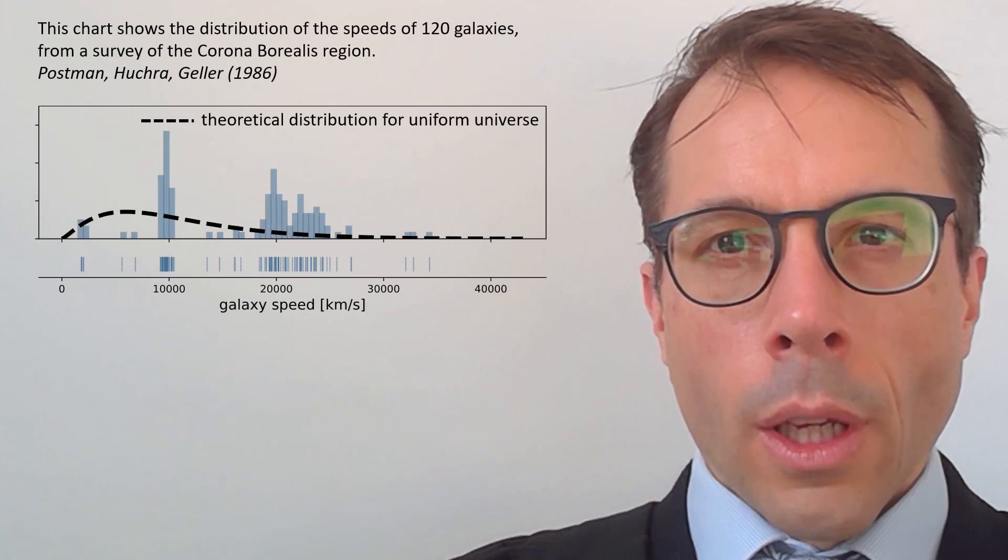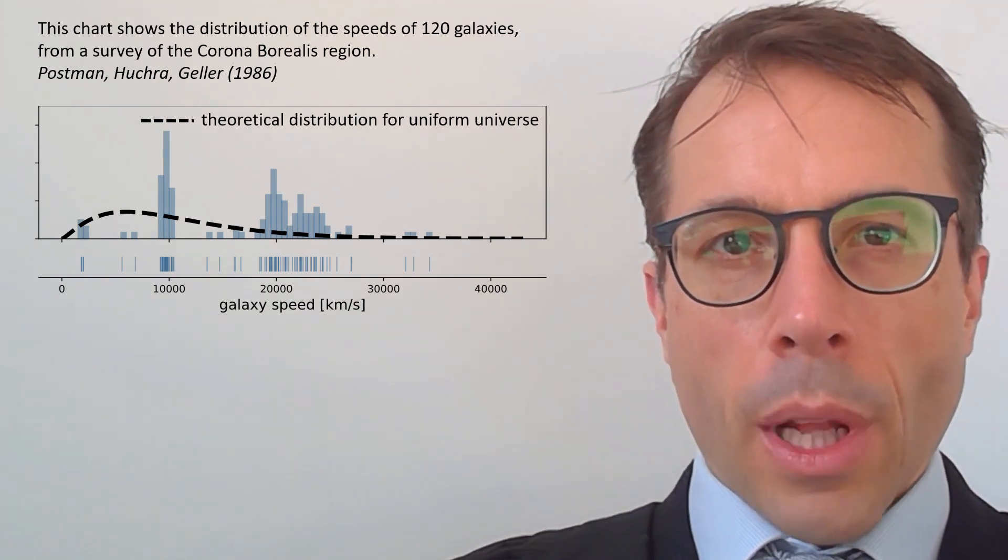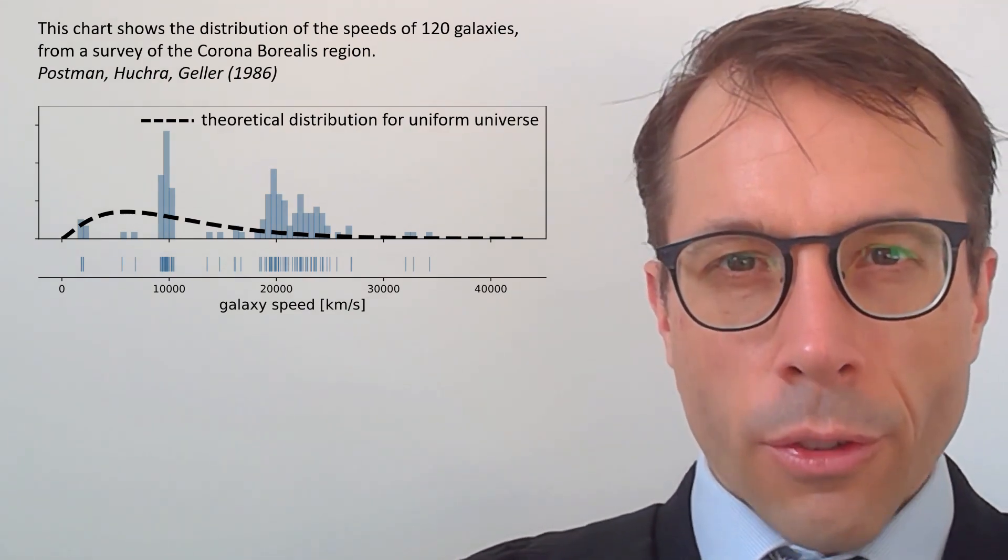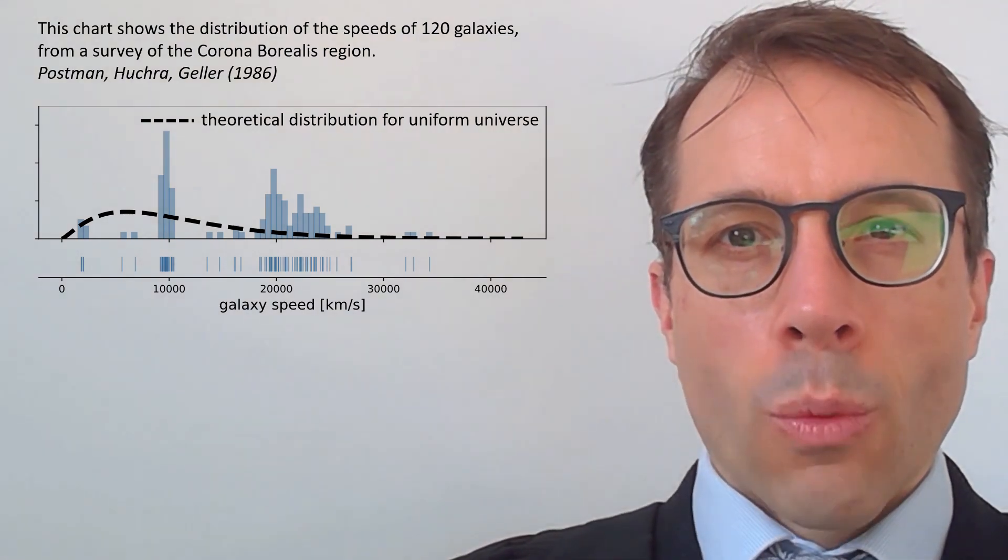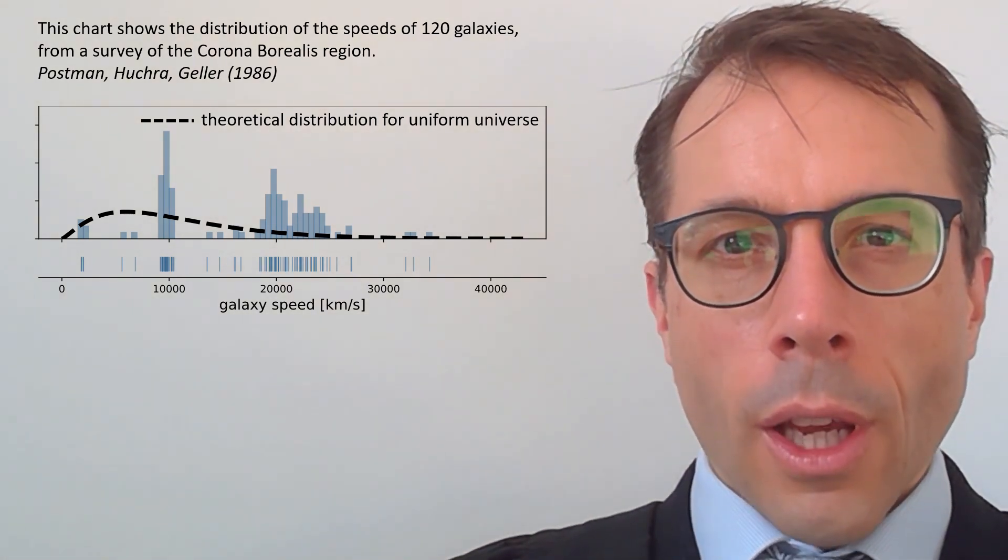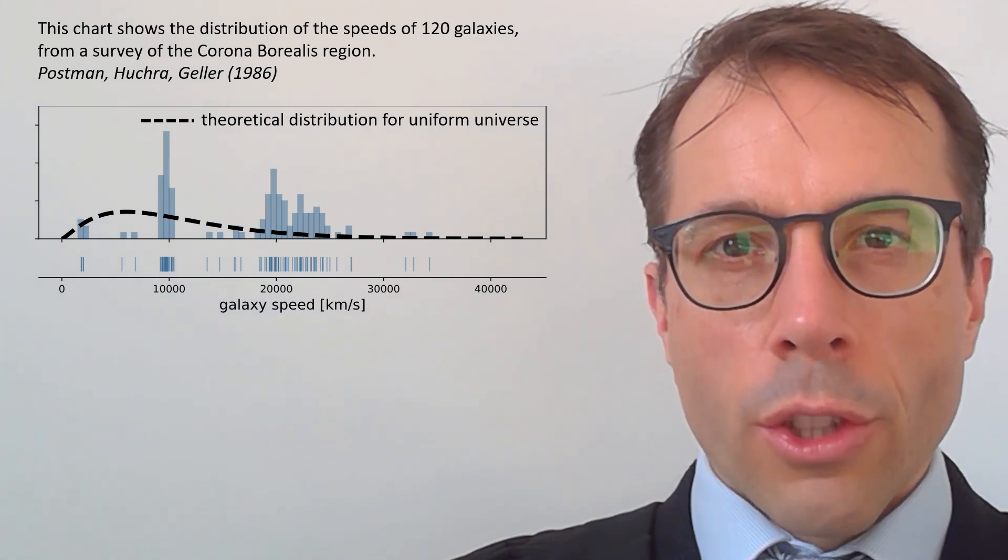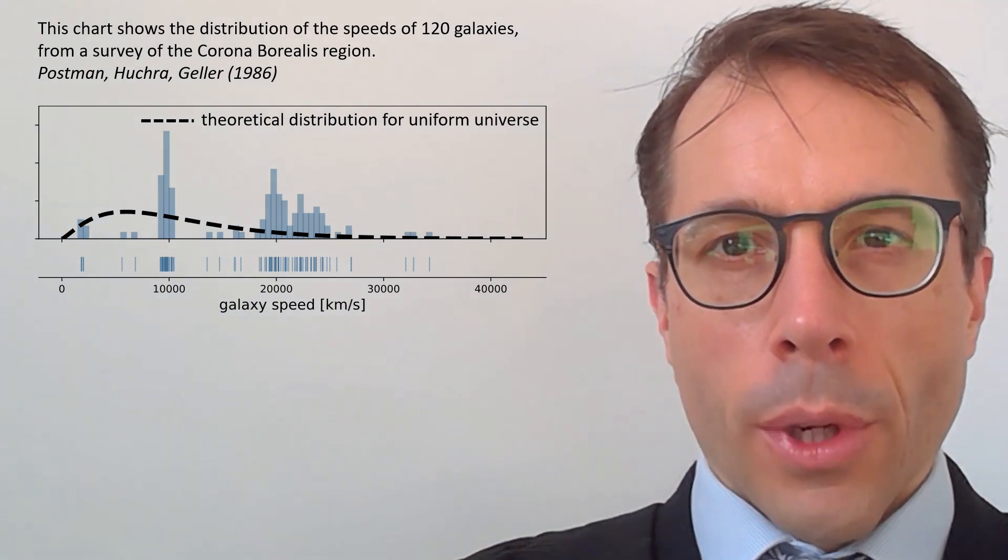Here's a dataset we looked at back in section 1 of the course. It comes from an astronomy paper published in 1986 about large-scale structure in the universe. The dataset consists of data about 120 galaxies and it has the radial speed at which those galaxies are moving away from us.